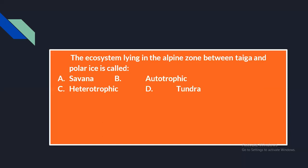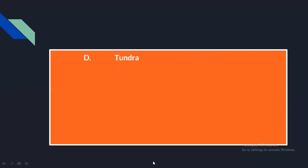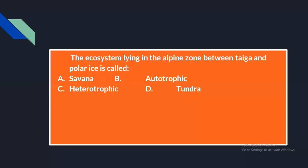The next question: the ecosystem lying in the alpine zone between taiga and polar ice is known as — option A: savannah, option B: autotrophic, option C: heterotrophic, option D: tundra. The answer is tundra. You should know about all of these — savannah, autotrophic, heterotrophic, and tundra zones. A detailed lecture on all these different zones will be prepared.